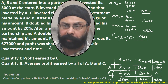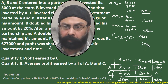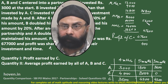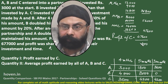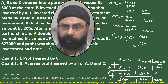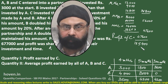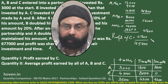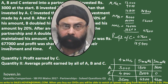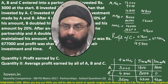What is the sum? We can calculate: 31800 + 56000 + 47600 = 135400. And this fraction is multiplied by the total profit of 67700.